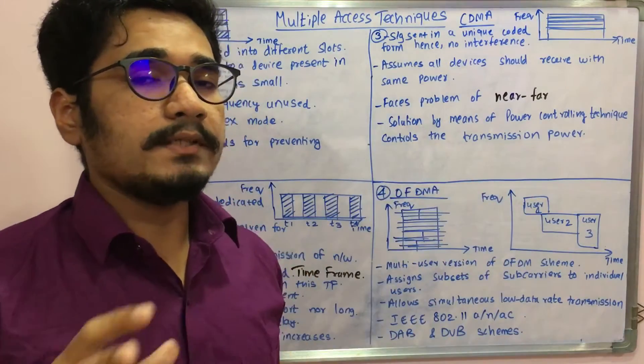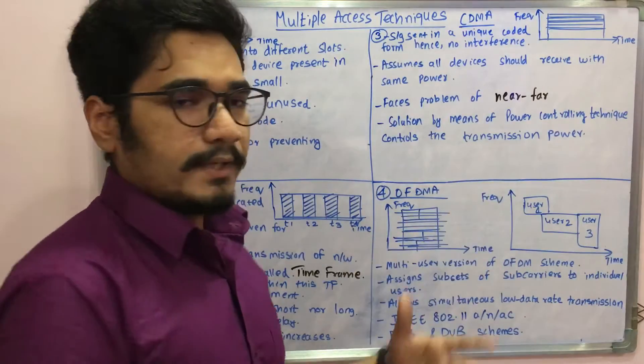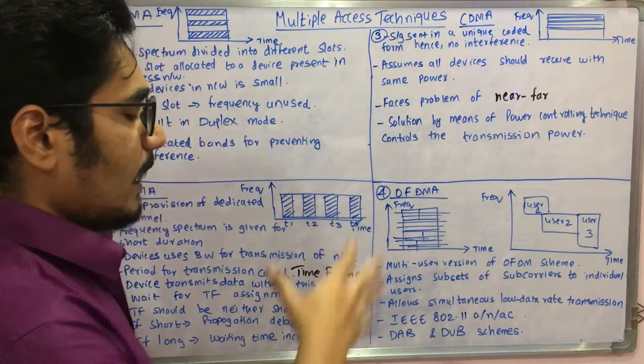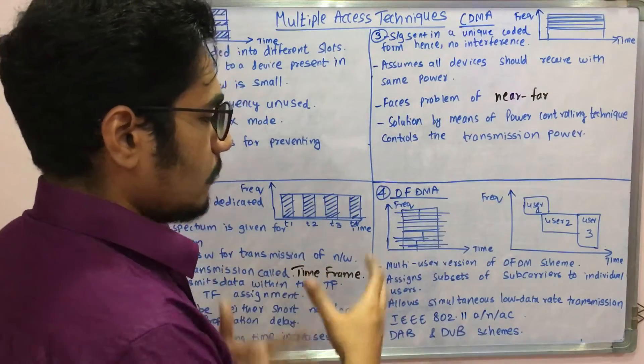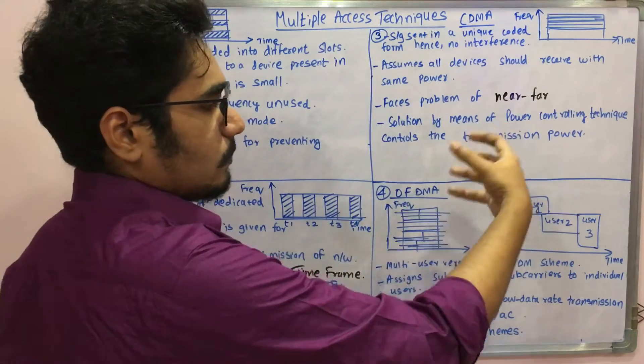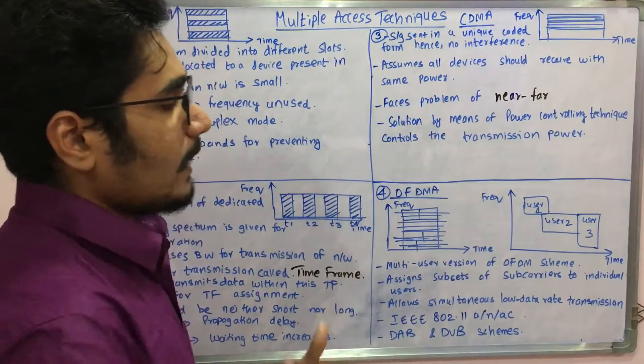This technique employs the multi-user version of the OFDM scheme—that is, it employs an orthogonal frequency division multiplexing scheme. It uses that scheme in order to implement this multiple access technique, and it assigns a subset of the carriers to individual users.